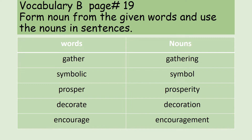Prosper is an action and prosperity — khushhali — is a thing. It's an abstract noun; we can't feel or touch prosperity, but it still falls in the category of noun. Decorate is an action and decoration — sajawat — is a noun, the thing that is decorated. Encourage is an action and encouragement is a thing, a quality. Though it is an abstract noun, it is still in the category of noun.